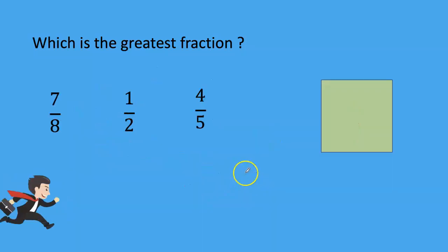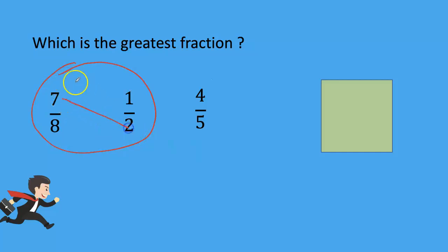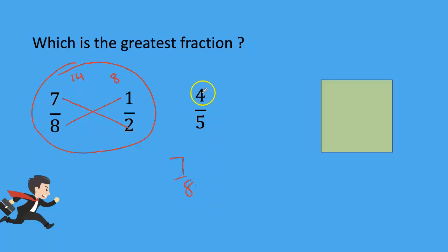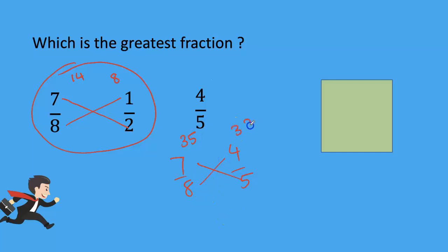Let us see one more example. Which is the greatest fraction? Compare the fractions: 7 by 14 — 8 ones are 8, so 7 by 8 is bigger. Then compare with 4 by 5: cross multiply — 7 fives are 35, and 8 fours are 32. So 35 is bigger, and the result is 7 by 8.